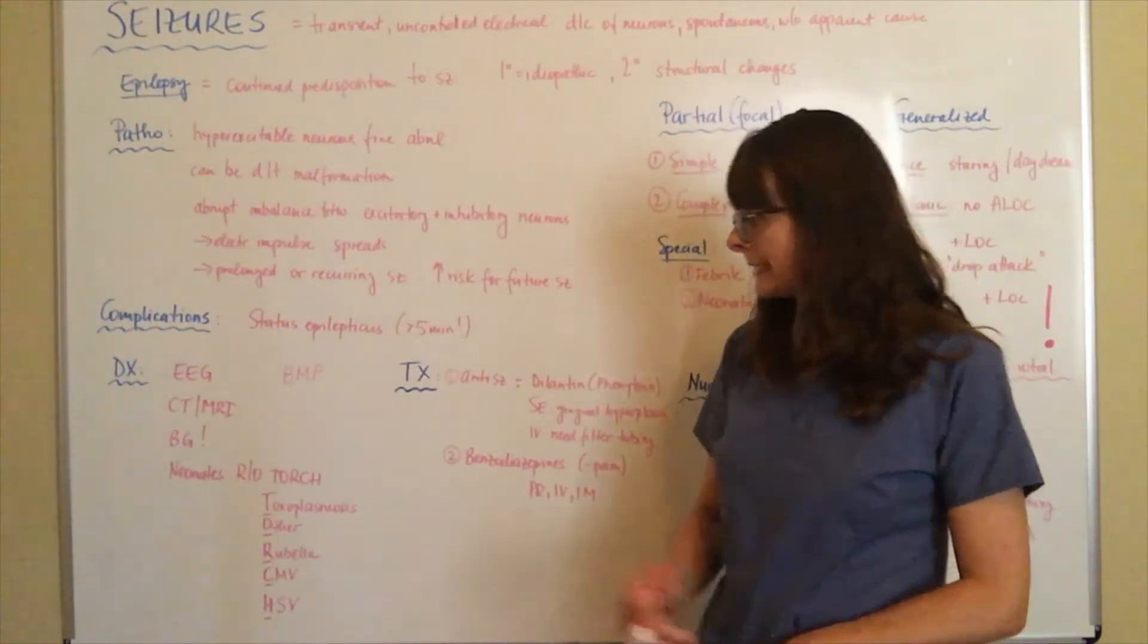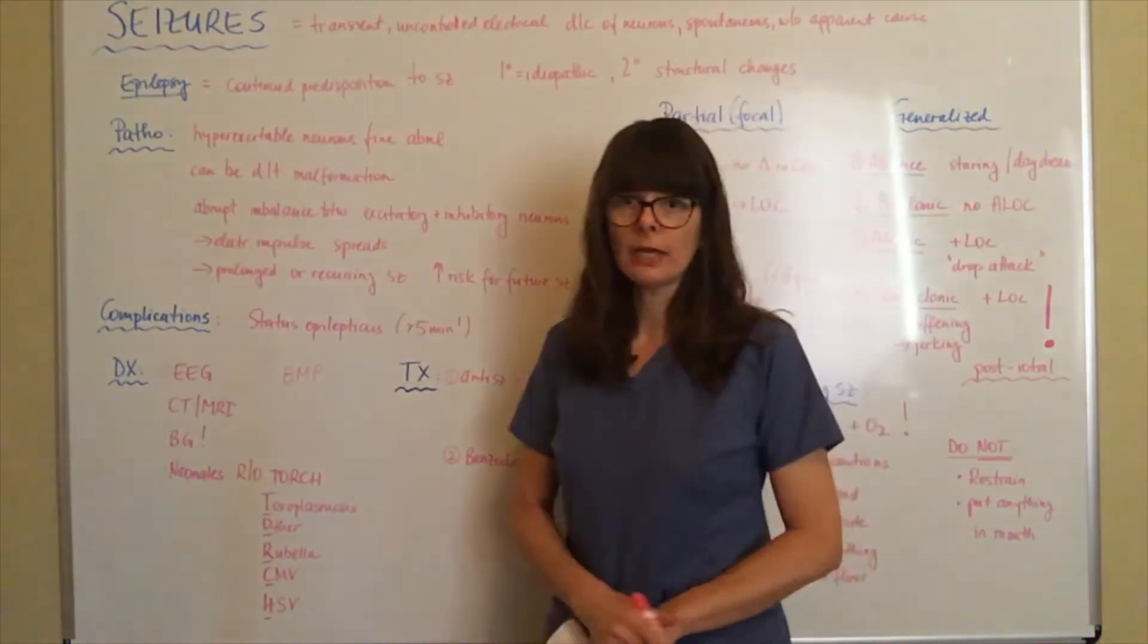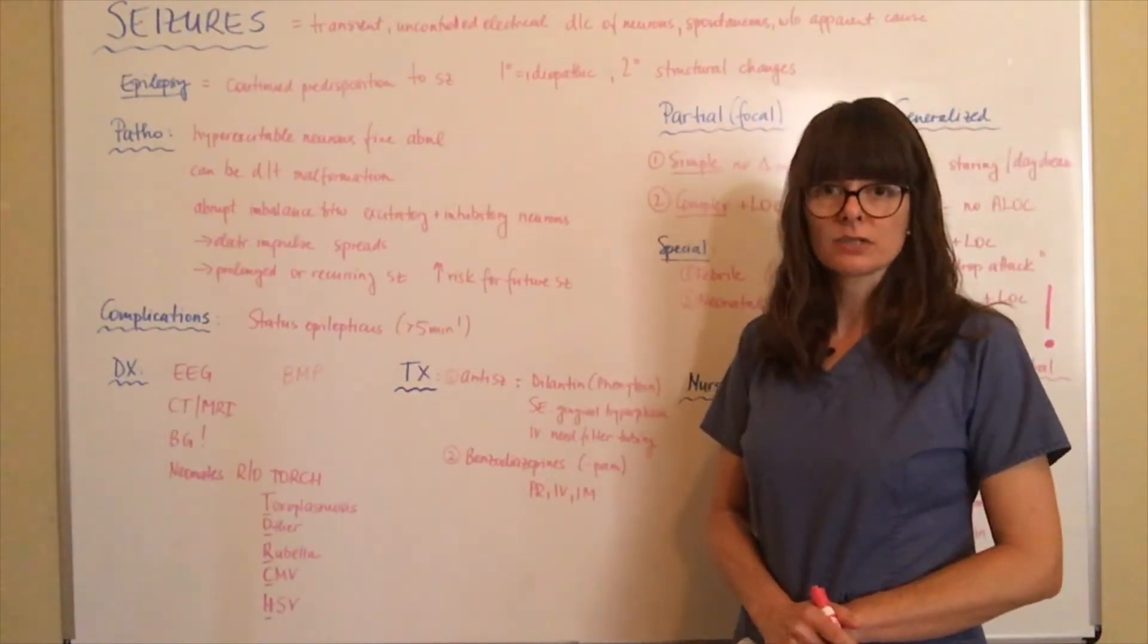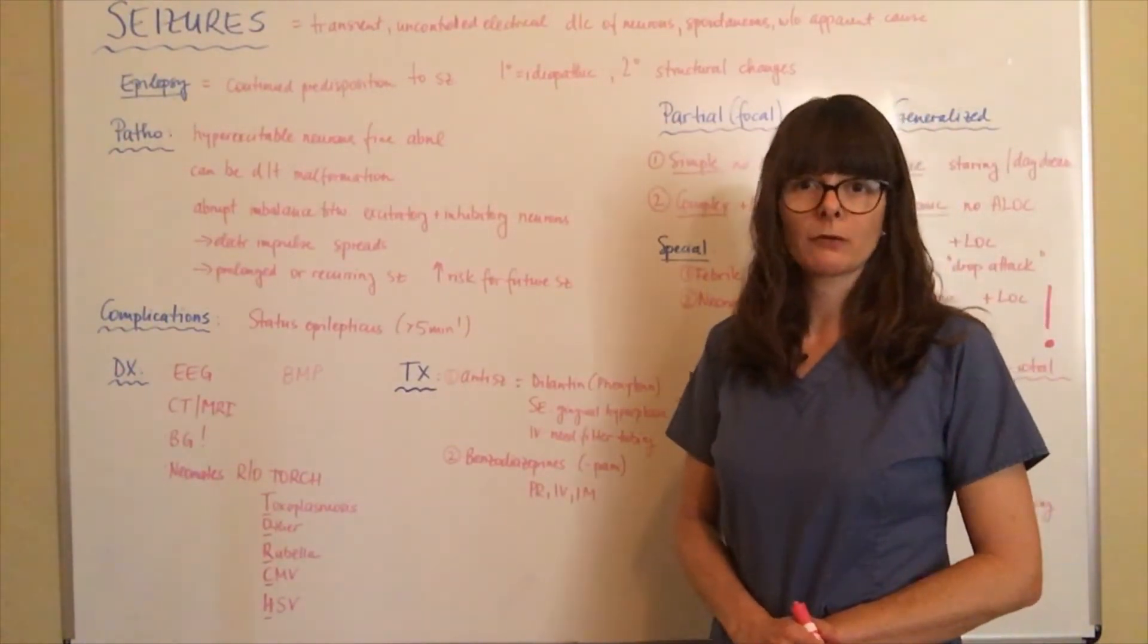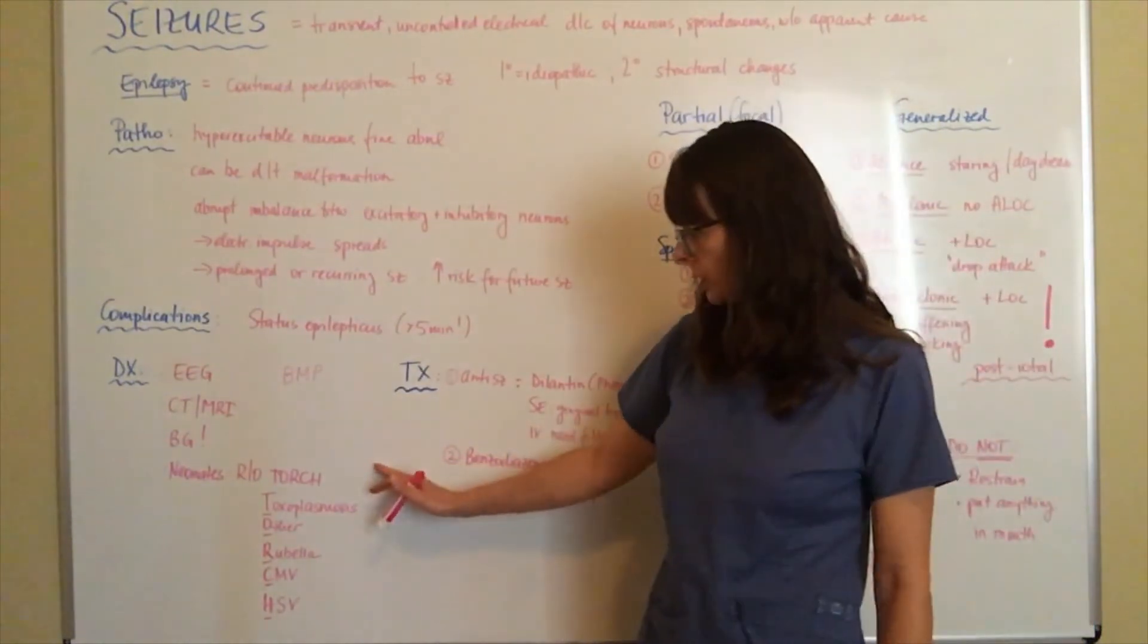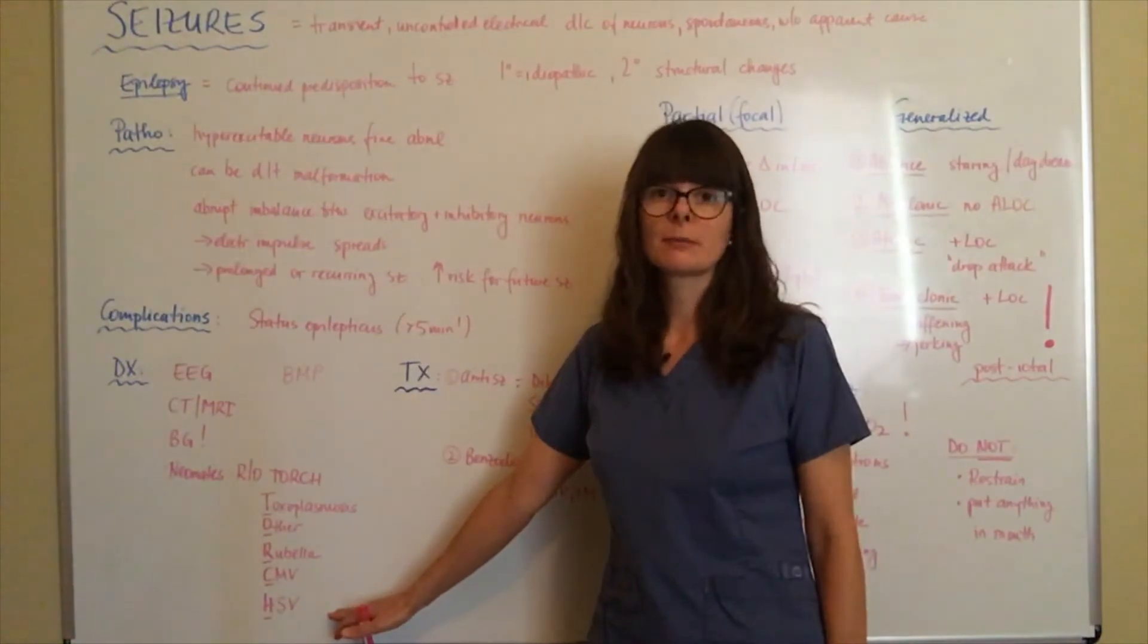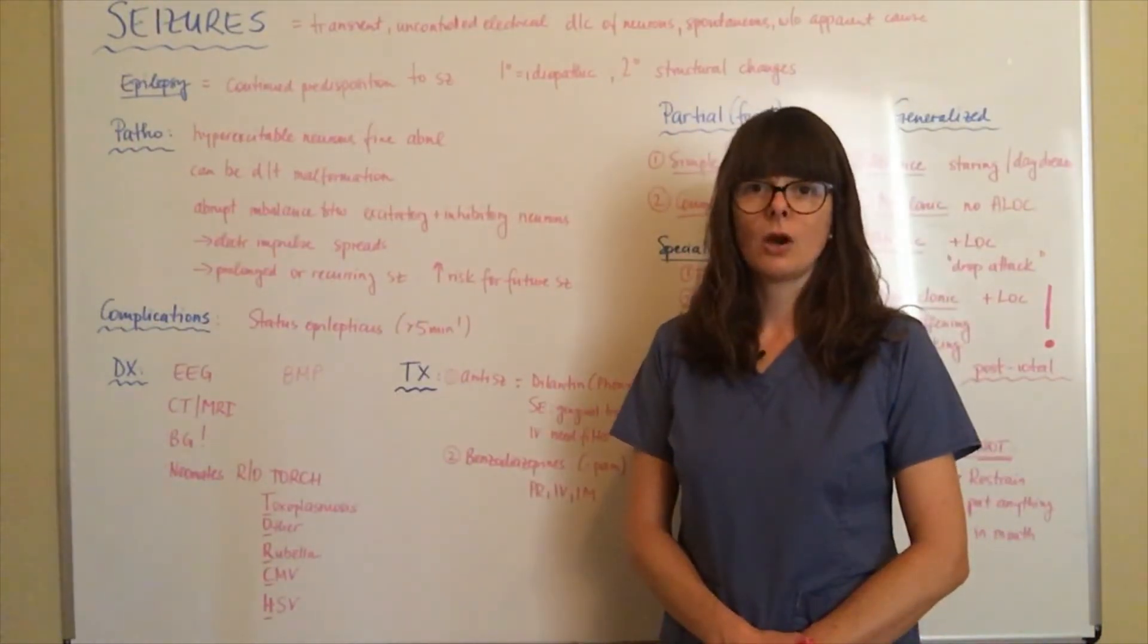If we look at neonates, we have to rule out TORCH infections. When neonates are born, they can have seizures as well. We have to consider structural abnormalities such as hydrocephalus or spina bifida, but also certain kinds of infections that could have been transmitted from the mother to the neonate could cause seizures. This acronym TORCH is very helpful here, and it stands for toxoplasmosis, other infections, rubella, cytomegalovirus, or HSV or herpes simplex virus. Then the child will get tested for all these infections to see if that's the cause of their seizure.